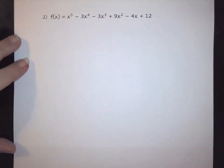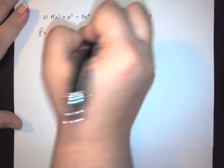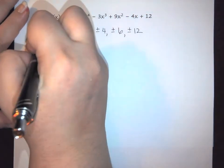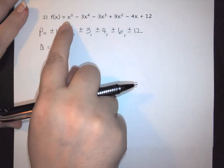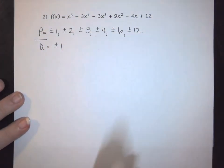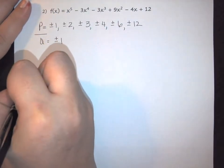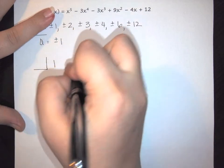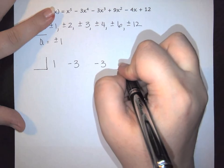Let's look at another example. We do the same process: find P's and Q's. P comes from 12: plus or minus 1, 2, 3, 4, 6, 12. Q is plus or minus 1 since the leading coefficient is 1. So P over Q is essentially the same as P. Setting up synthetic division with coefficients 1, -3, -3, 9, -4, 12 — noticing most are multiples of 3 — I'll try 3.